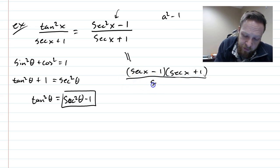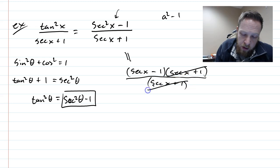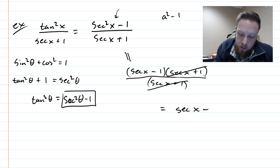The denominator is still there. So we have secant x plus 1. And we have two chunks that we can now cancel out. So this is all going to equal secant x minus 1.